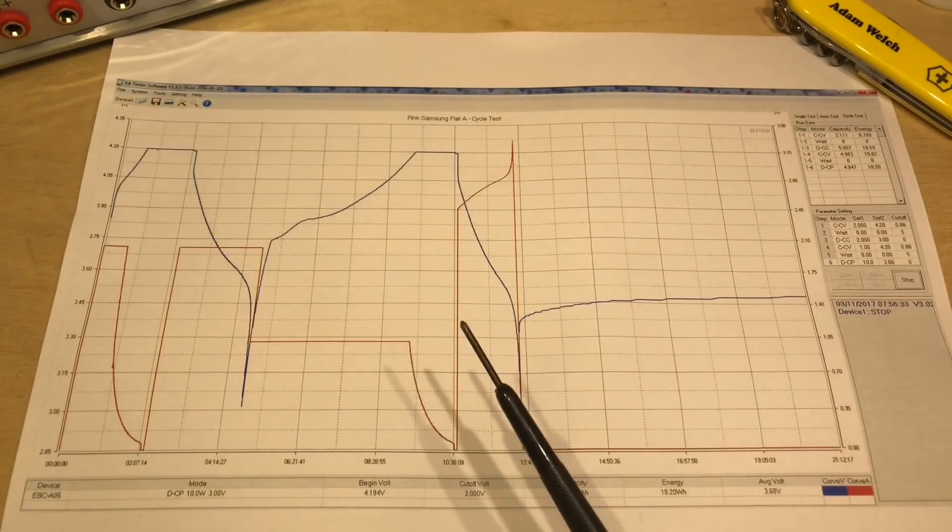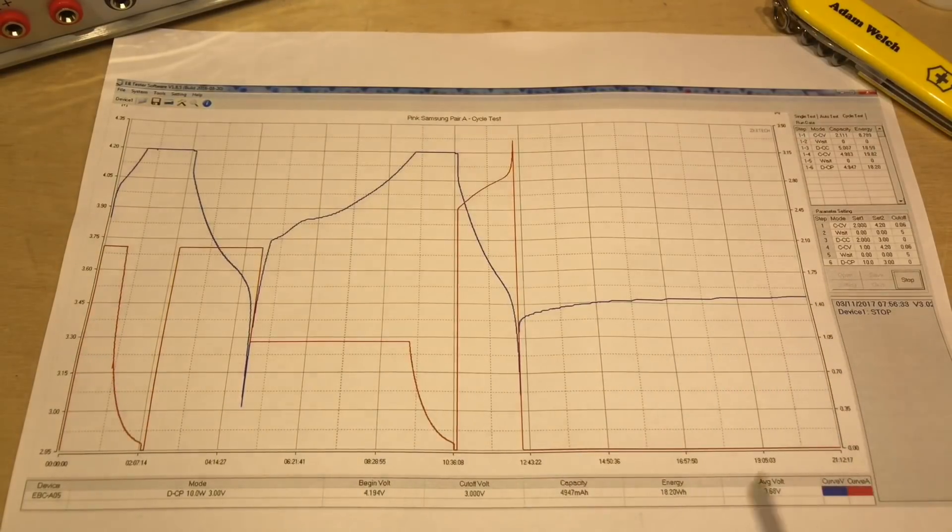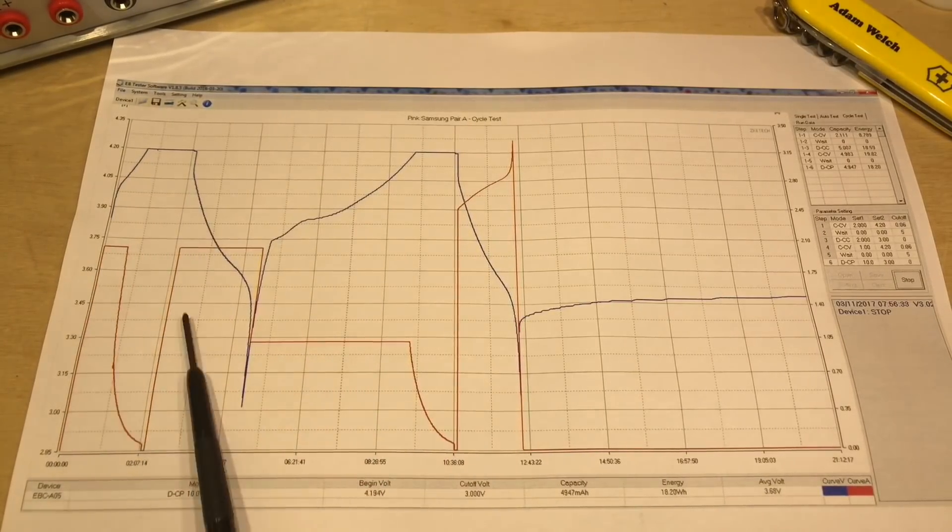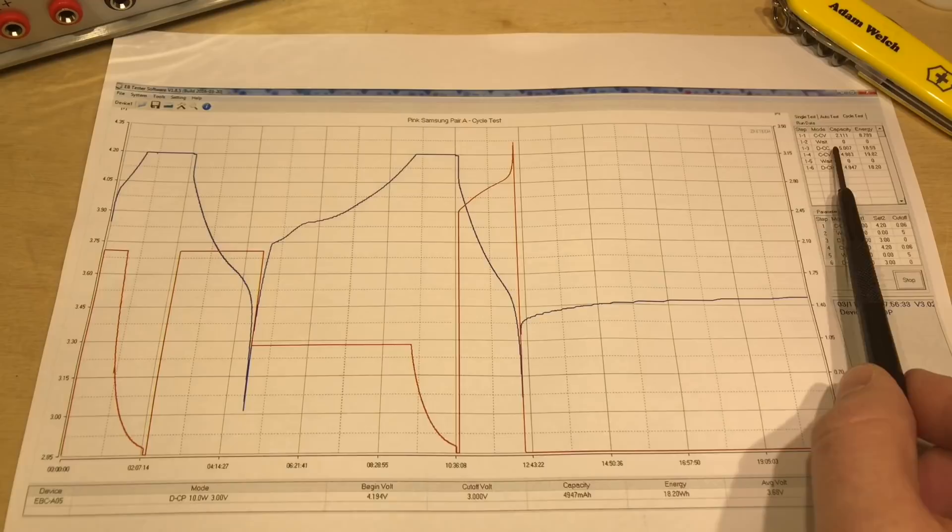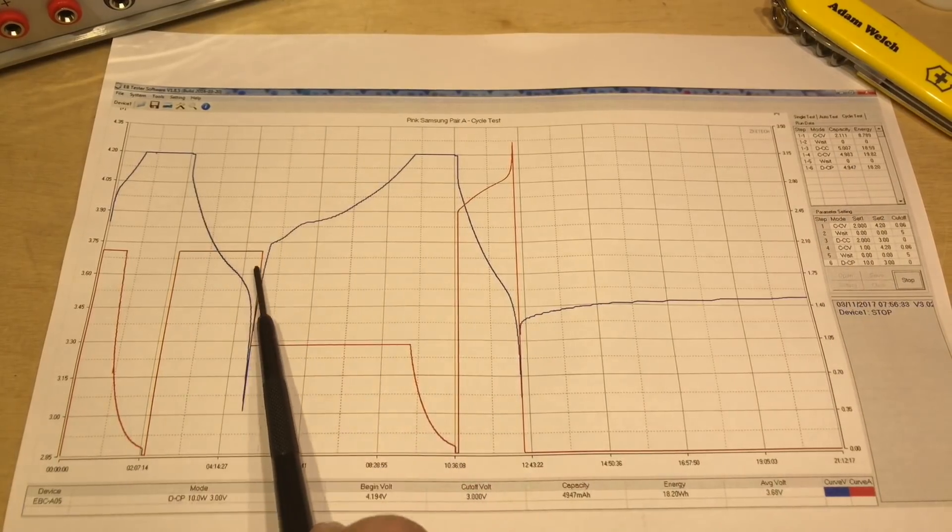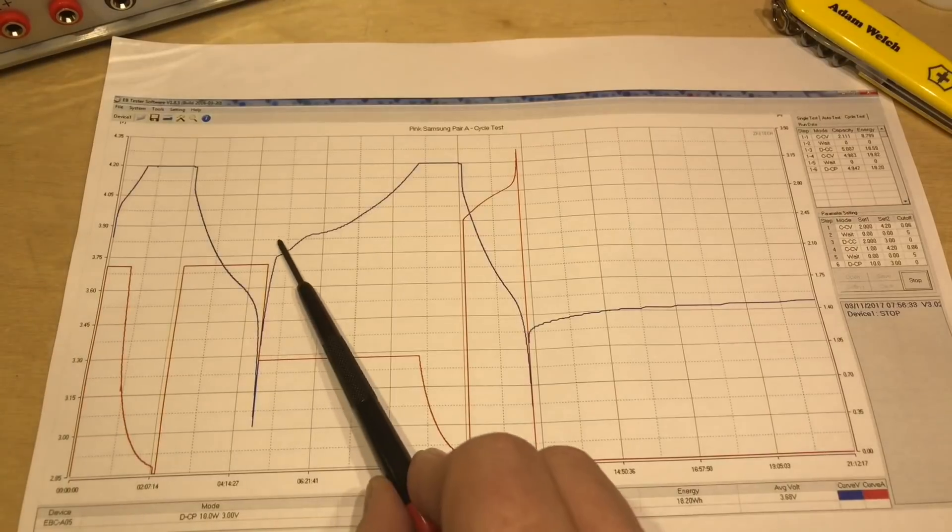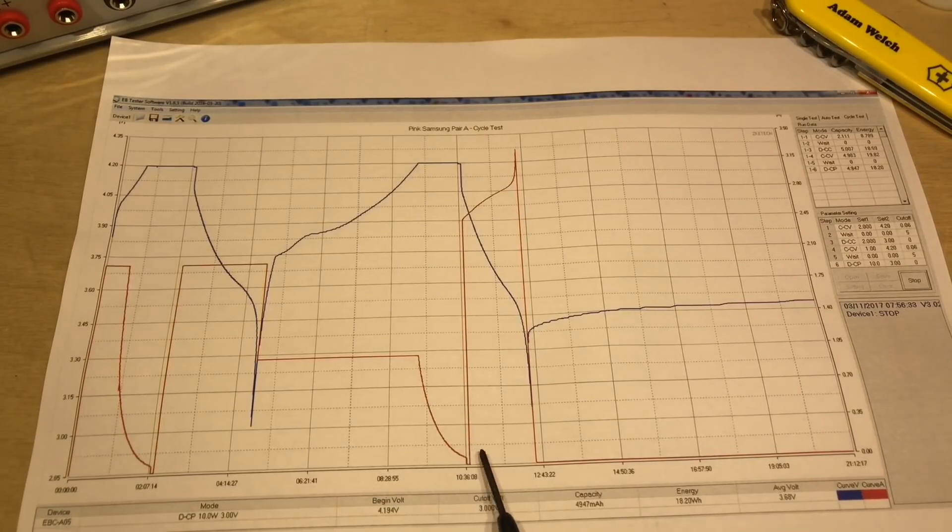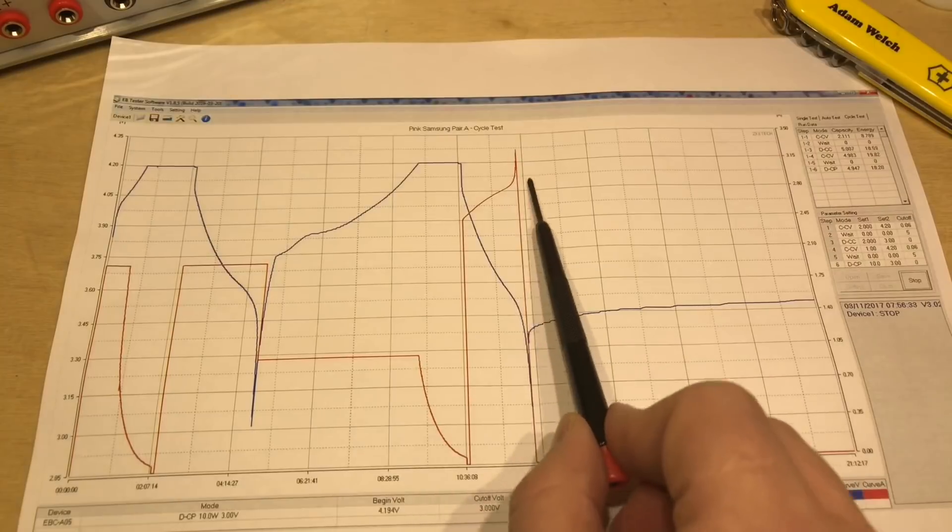Now these graphs can get quite complicated, and we can have these running for a considerable amount of time. 21 hours this particular graph runs for. Step 1 was a constant voltage charge, so we got the cells up to 4.2 volts, and we were pushing about 2 amps into them as that was dropping away. And then there is a slight pause here of 5 minutes I think it is. And then we did a constant current discharge, so the voltage of the cell dropped down as we took 2 amps out of it. I then did a constant voltage charge all the way up to 4.2 volts again. Another period where we just waited for 5 minutes, and then a constant power discharge, this time at 10 watts, and finishing at 3 volts.